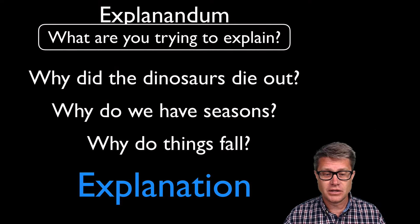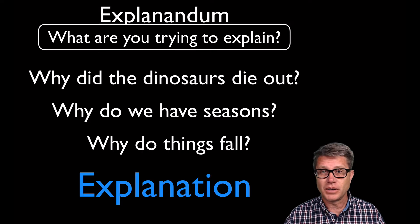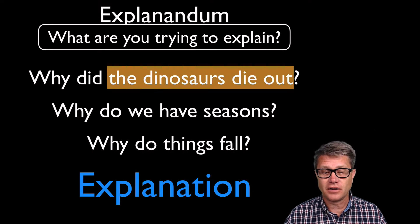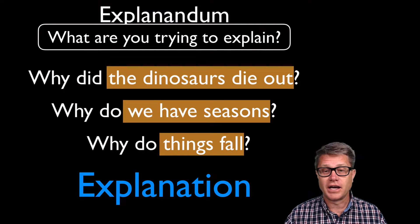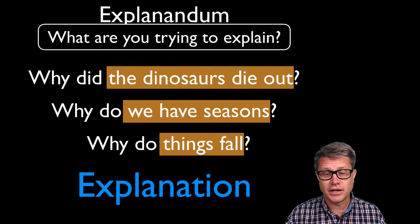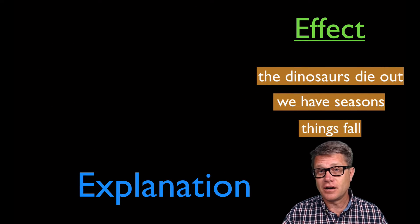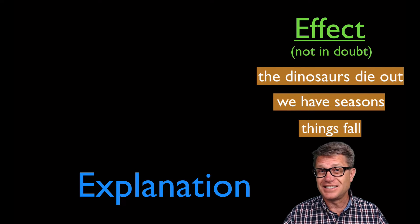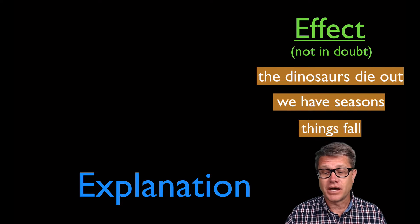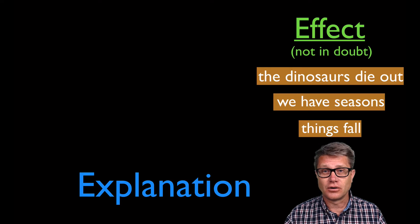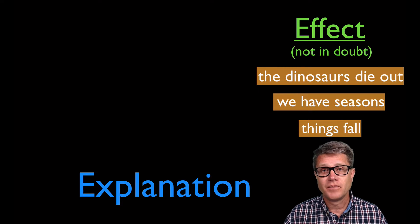So if we look at these three questions: Why did the dinosaurs die out? Why do we have seasons? And why do things fall? Each of them have an explanandum, which is that thing we're trying to explain. If we move those over to the right, we find that those are the effects, and those are not in doubt. No one doubts that we have seasons or things fall, or if we ignore birds, that dinosaurs died out.